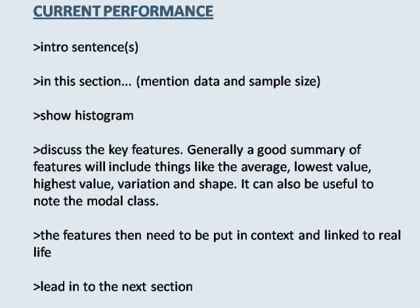Following the historical section we can go on to the current performance section. Here you will need to consider the distribution of one year returns in isolation, which is therefore one variable analysis. You will then need to consider what factors may influence the one year returns, and so this means several bivariate relationships must also be analysed, but these will go into the next section. To start, we can have an intro sentence plus something to indicate the focus of this section.